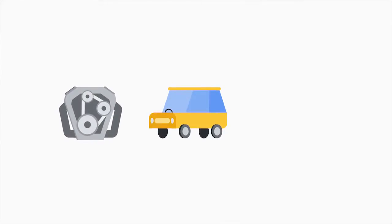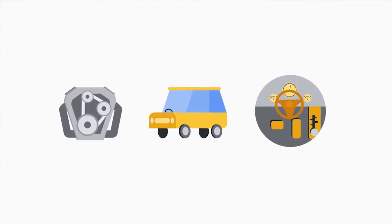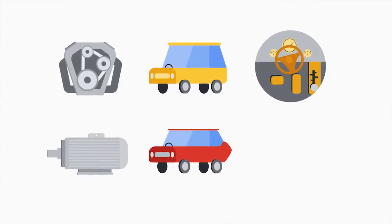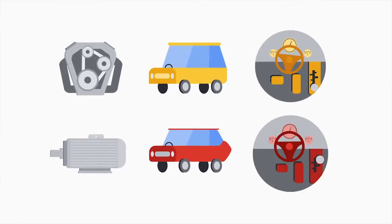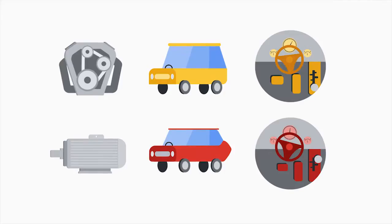You use abstraction every day in the real world and you may not even know it. If you've ever driven a car, you don't need to know how to operate the transmission or the engine directly. There's a steering wheel, some pedals, maybe a gear stick. If you buy a car from a different manufacturer, you operate it in pretty much the same way even though the stuff under the hood might be completely different. This is the essence of abstraction.